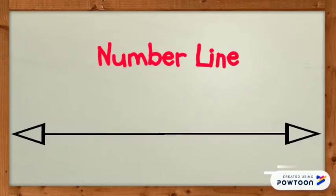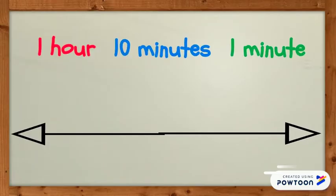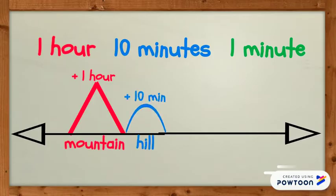To measure elapsed time, we are going to use a number line. Our number lines for elapsed time will count by intervals of 1 hour, 10 minutes, and 1 minute. In our last video, we learned to record an hour as a big pointy mountain, 10 minutes as a medium-sized hill, and 1 minute as a small rock.